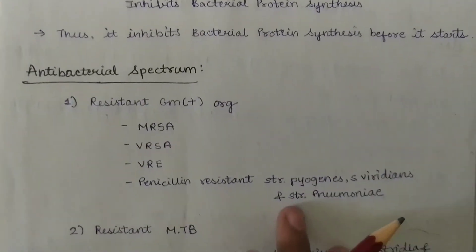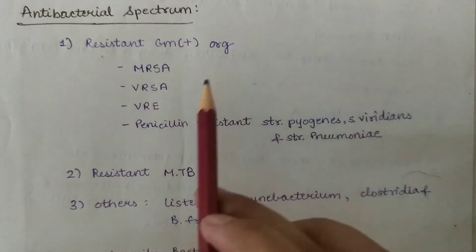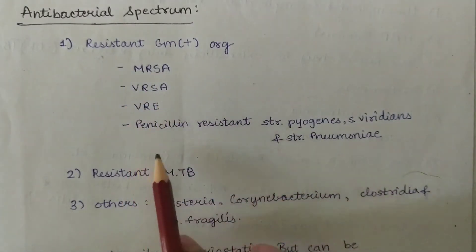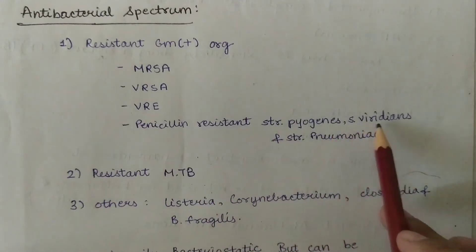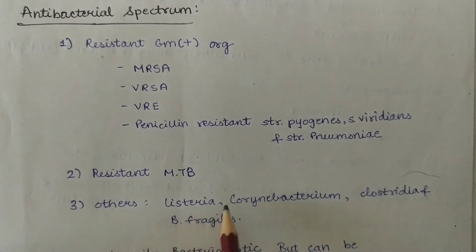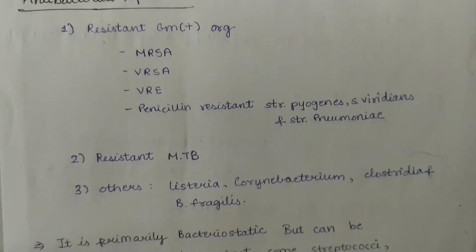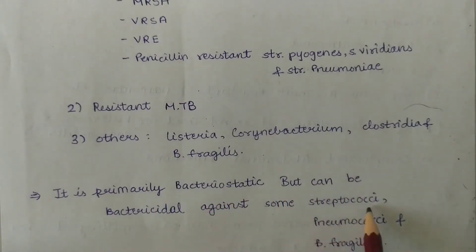Next, we will discuss the antibacterial spectrum. It is active against resistant gram-positive organisms like MRSA, VRSA, VRE, and penicillin-resistant Strep pyogenes, Strep viridans, and Strep pneumoniae. It is also active against resistant MTB, Listeria, Corynebacterium, Clostridia, and Bacteroides fragilis. It is primarily bacteriostatic but can be bactericidal against some streptococci, pneumococci, and Bacteroides fragilis.